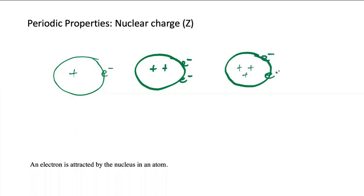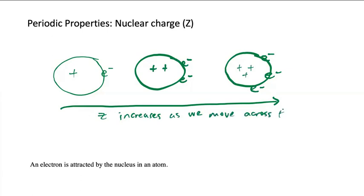So what happens to the nuclear charge? Well, the nuclear charge, as we go across the periodic table or the period, it increases. Nuclear charge, or I can just say Z, increases as we move across the periodic table.